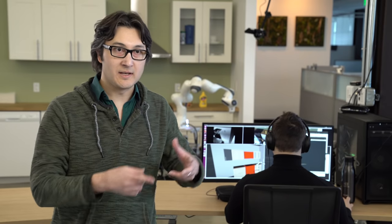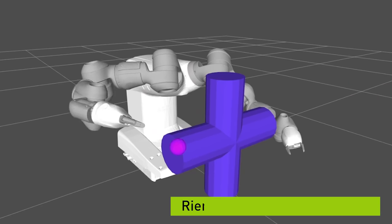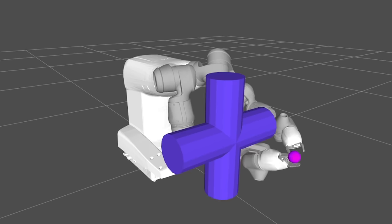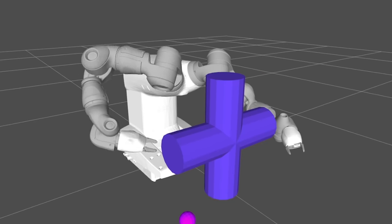And that information is fed then to the motion generation layer, which uses a system we call Riemannian motion policies, which is able to get the robot to generate real-time, fast, reactive, adaptive, and human-like motion in these collaborative spaces.